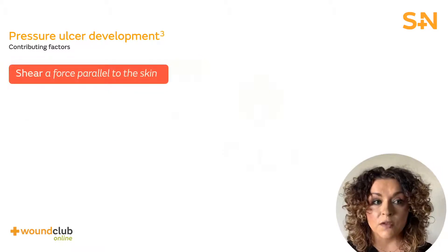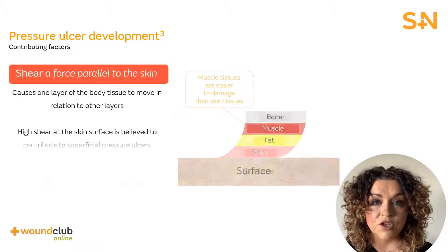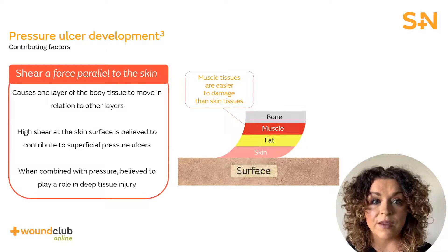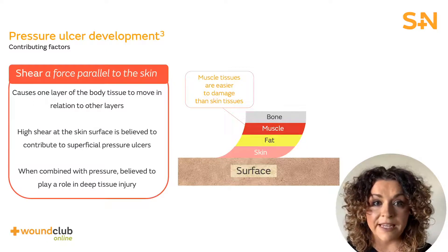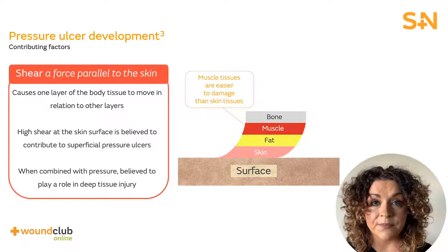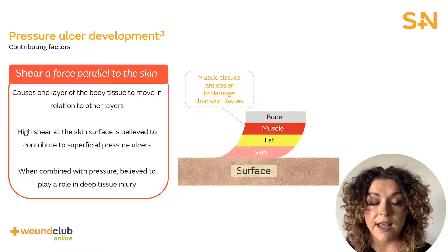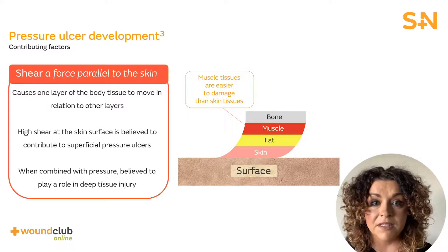Shear is a force parallel to the skin which causes one layer of the body tissue to move in relation to others and is believed to play a role in deep tissue pressure injury. A slight lateral movement of only half a centimetre can significantly increase force at the bone muscle interface. Muscle tissues are not as stiff as the skin and are more easily damaged.